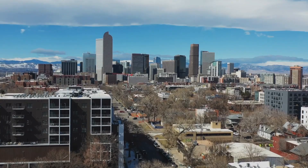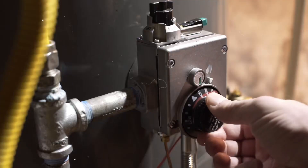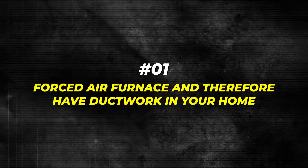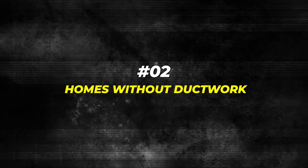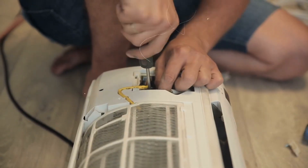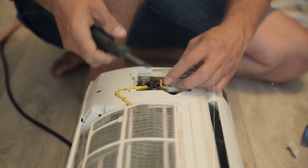This is a very common scenario in Colorado, in homes that have boilers but have never had air conditioning at all. If you've never had air conditioning in your home and you've finally decided to add it, you're going to fall into one of two categories. Number one is that you have a forced air furnace and therefore have ductwork in your home, and the second category is for homes without ductwork. This video is focused on retrofit installation of air conditioning into homes that have existing ductwork.